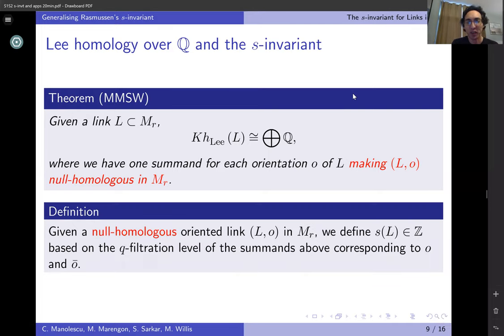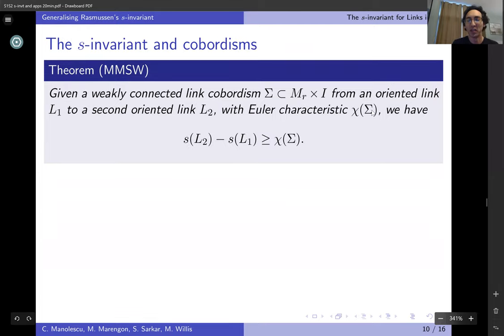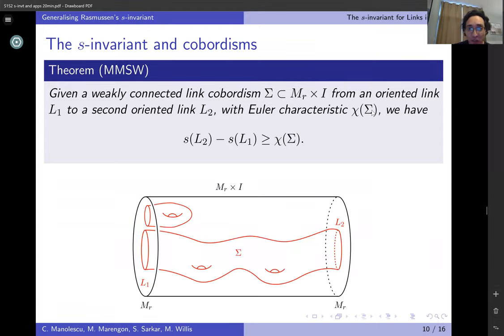If we want to define an S invariant, it's really only going to make sense if our oriented link is null-homologous. So if you're handed such a link in a connect sum of S¹ cross S²'s, then you can define an S invariant using the filtration level of whatever summands correspond to your given orientation and its opposite orientation. You can define this integer-valued invariant of your null-homologous link, and then you get the exact same theorem. If you have a weakly connected cobordism, now in this manifold MR cross I, from one null-homologous link to another, then the difference in the S invariants bounds the Euler characteristic of your surface.